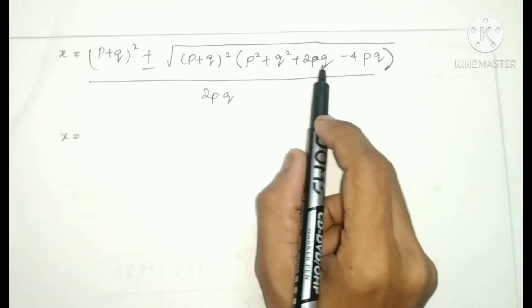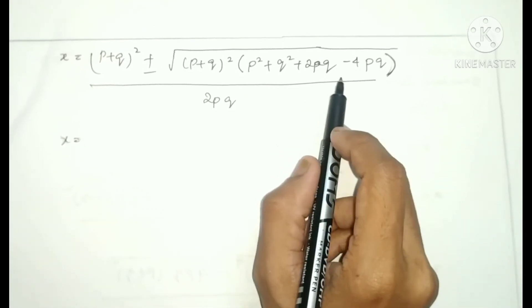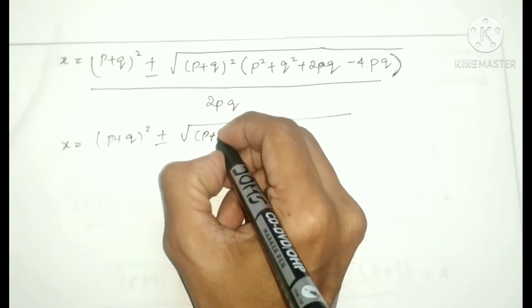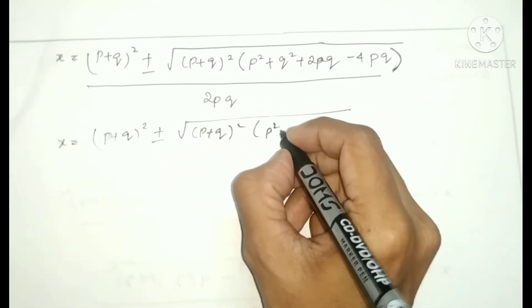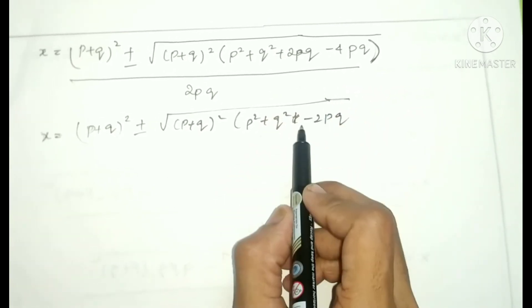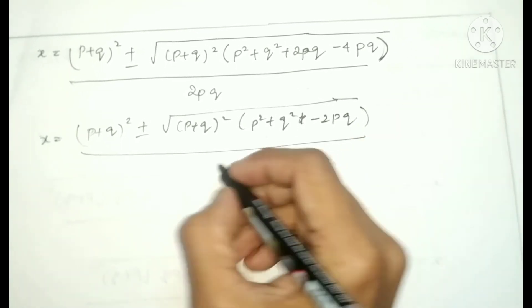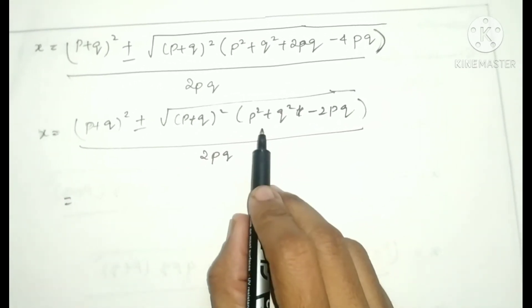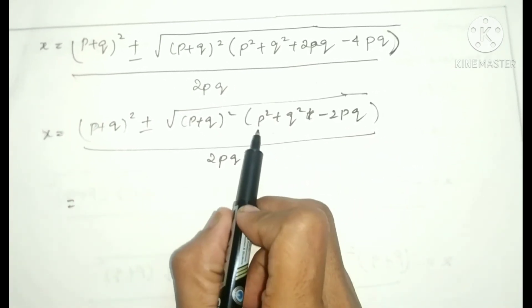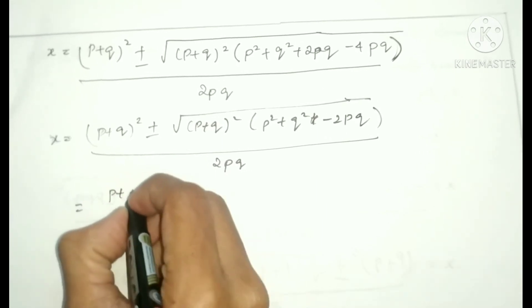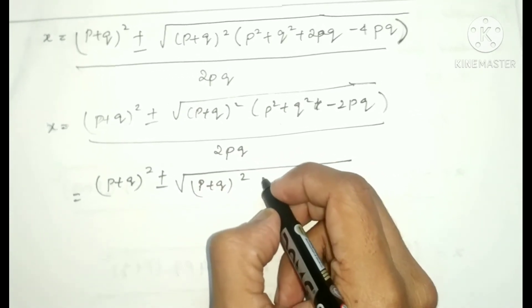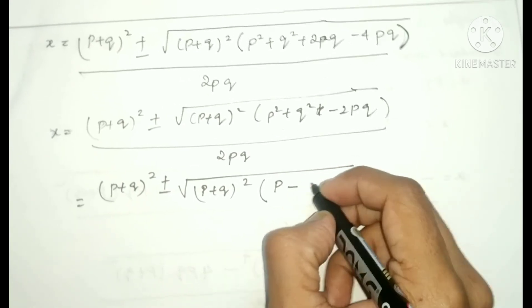Now we simplify. We note that P² + Q² - 2PQ = (P-Q)², using the identity a² + b² - 2ab = (a-b)². So X = (P+Q)² ± √[(P+Q)² × (P-Q)²] / 2PQ, which simplifies to X = (P+Q)² ± (P+Q)(P-Q) / 2PQ.